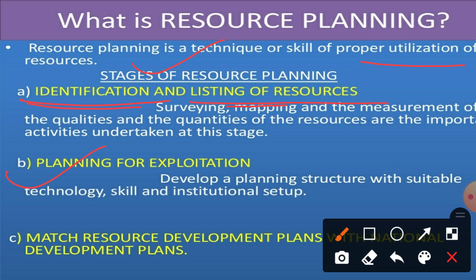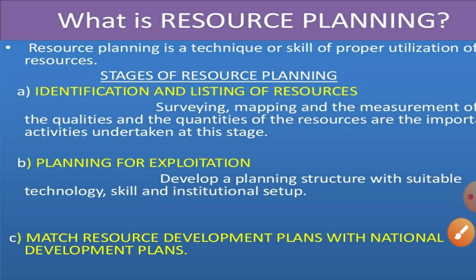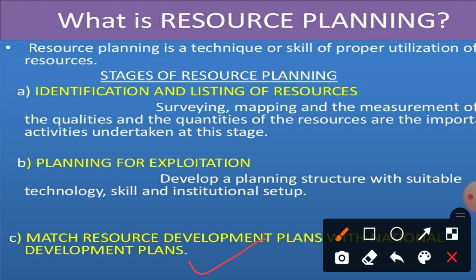After identification and listing, the second stage is planning for exploitation — how do we exploit and use them — so we develop a planning structure with suitable technology, skills, and institutional steps. Then after exploitation, we need to match the resource planning development plan with the national development plan according to national priorities.